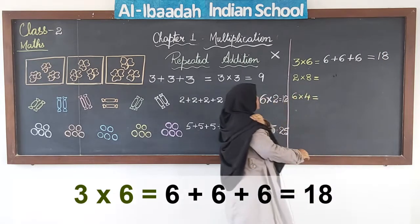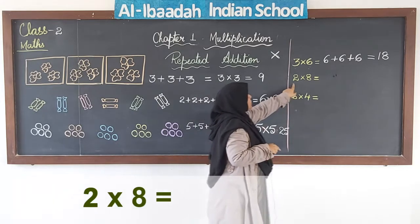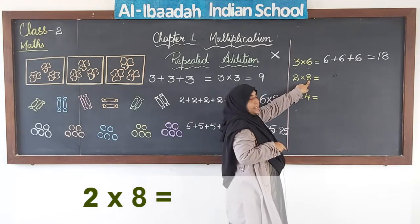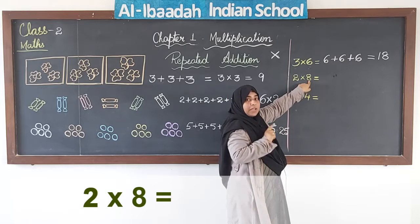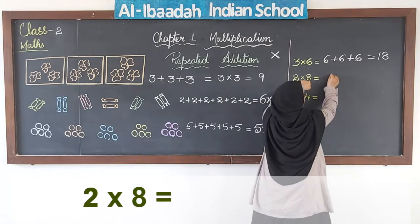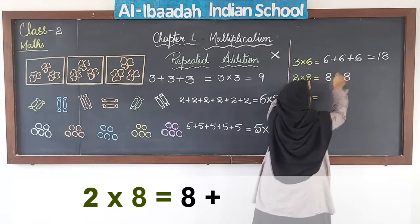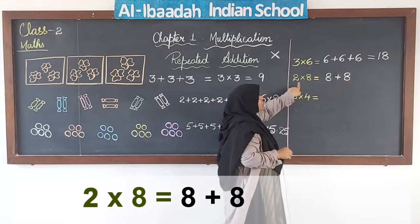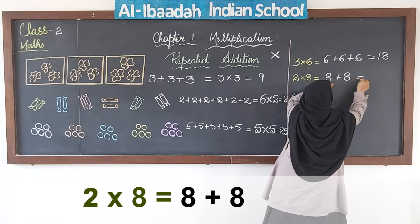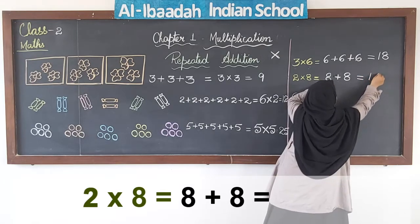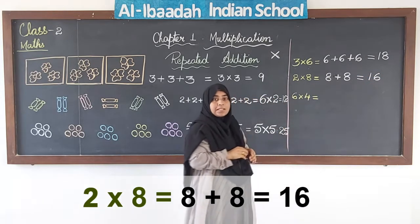Now let us look at the second example: 2 into 8. That means 2 times 8 — I have to add 8 two times. So 8 plus 8 is 16. So 2 into 8 is 16. This is how we form multiplication tables.